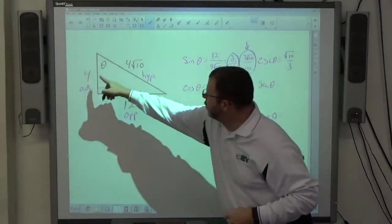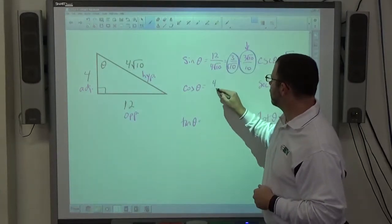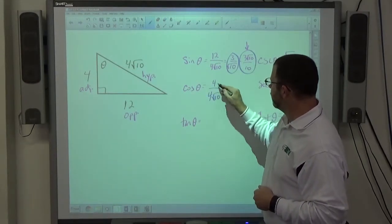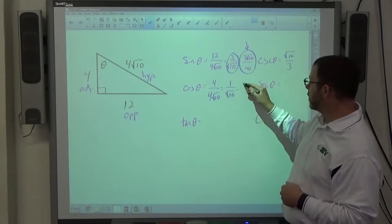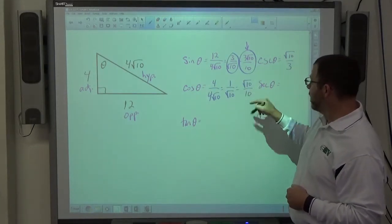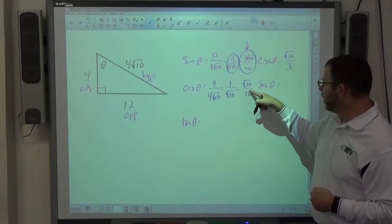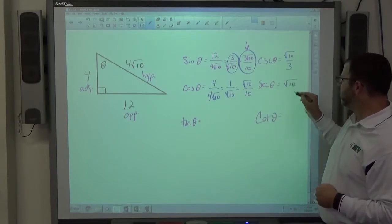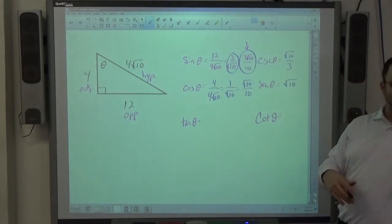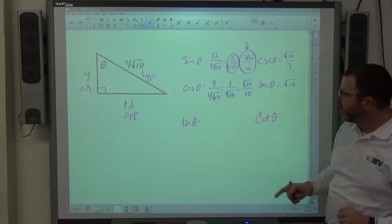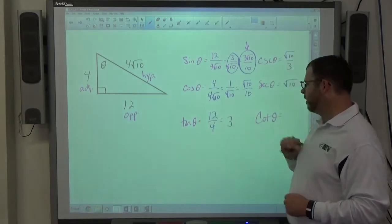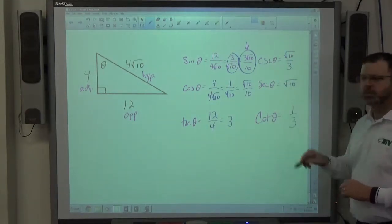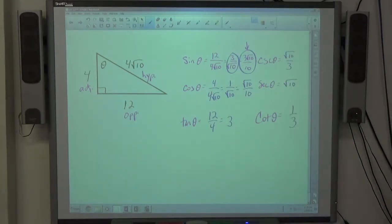And then look at cosine, same deal. Adjacent over hypotenuse, that's 4 over 4 root 10. Four is cancelled, that's 1 over the square root of 10. Multiply top and bottom by the square root of 10, we get square root of 10 over 10. And that's just going to be that, and then this reciprocate, square root of 10 is the secant over 1. You don't have to write the over 1. All right, tangent is opposite over adjacent, 12 fourths, better known as 3. Cotangent, that is 1 third. It's reciprocal of 3.